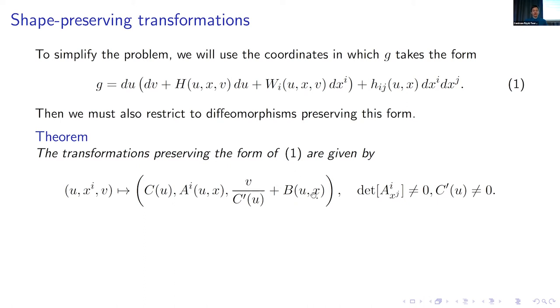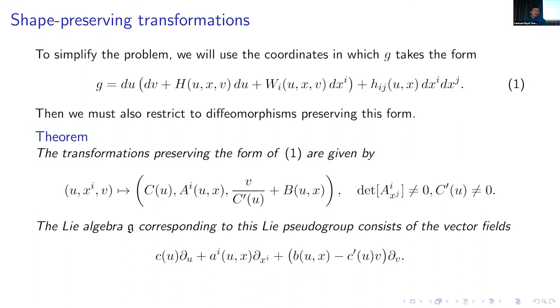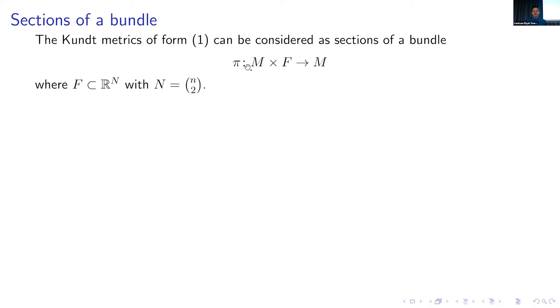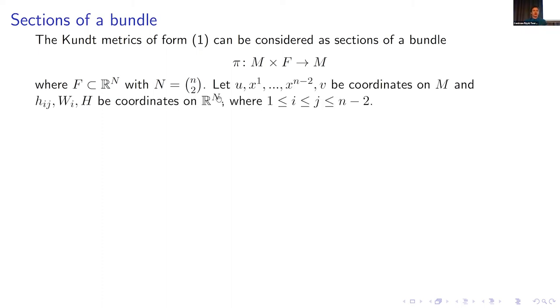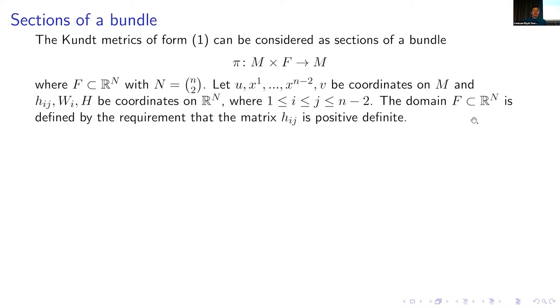A_i and B are functions of u and x_i, and C is a function of u. You have these conditions to make it invertible. The corresponding Lie algebra consists of vector fields of this form, and we will mostly talk about the Lie algebra. We think about these metrics as sections of a bundle: φ from M × F to M, where F is a subspace of R^n, and n-choose-2 is the number of functional parameters of our Kundt spacetimes. The domain in R^n is defined by the requirement that the matrix H_{ij} is positive definite, so that we actually get metrics.